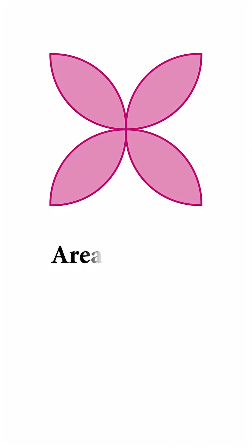Imagine a flower made of four semicircles, each with radius r. The total area of the flower is two. Your job is to find the radius r. Pause the video now if you want to try it yourself.